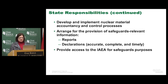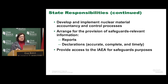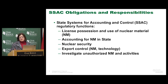Most important of all is to provide the means for an international organization to come into your country to verify those declared activities. One of the examples of this is to allow visa expedition — it has to be timely and for an extended period of time. Any measure that allows these inspectors to come into the country has to be at the state level of responsibility. One of the responsibilities of the state was to establish a state system of accounting and control.